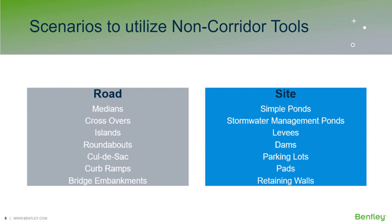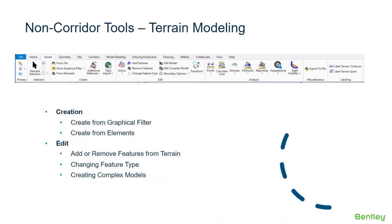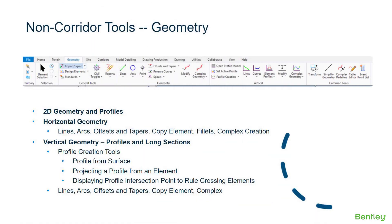Going across the top of OpenRoads Designer, I've picked out some of the most common tools we get questions about: creating graphical filters, creating a terrain model from elements or from graphics, editing terrain models, changing feature types — for example, if we have a break line and need it to be a void or a boundary — and creating complex models.